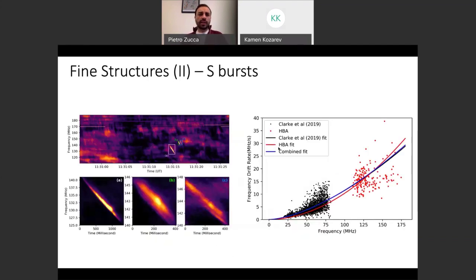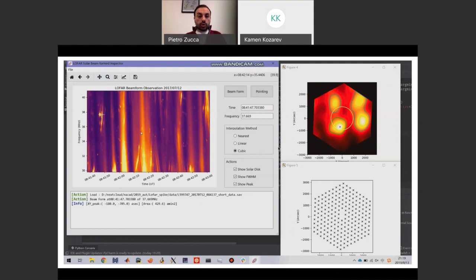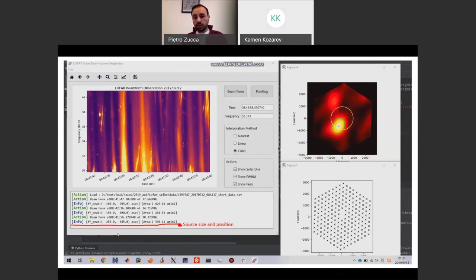Final thing is about these very faint and small features called S-bursts. These are fine structures that we can find with LOFAR. They are very tiny in terms of duration - milliseconds. They're really small. But with LOFAR resolution, both in the spectrograph and in imaging, we can understand them better and also find properties such as how they modify because of the different density properties of the corona.